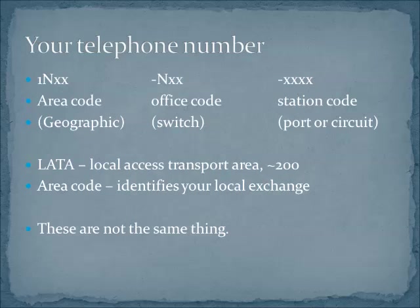Probably the most popular telco switch is something called a Class 5 switch, and one particular model is the 5ESS switch — very popular. These are the switches that connect phone calls. That second set of numbers identifies the office code, which is also another way of referring to your central office or your local exchange carrier. The reason you don't have to dial an area code when calling somebody close by is because you are in the same office code. The last four numbers identify the phone — or more precisely, the port or circuit that the phone is connected to. Whether we're applying signals or sending ringing voltage down that line, you're lighting up a particular circuit attached to a switch at the office.